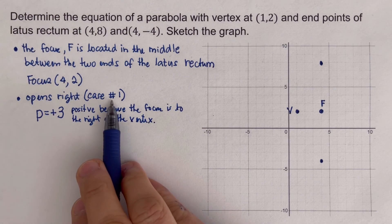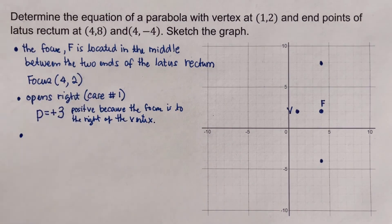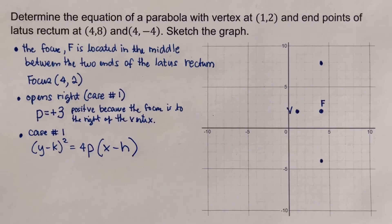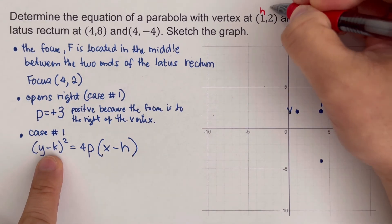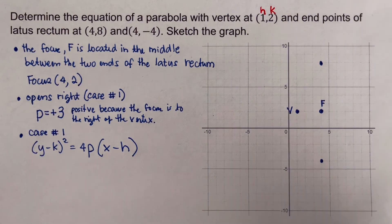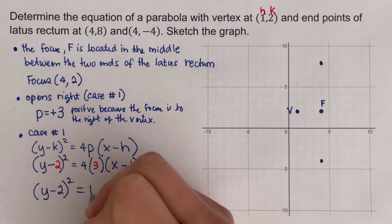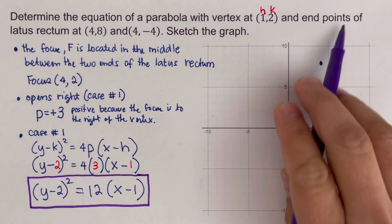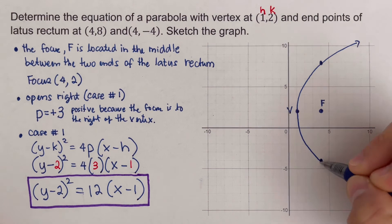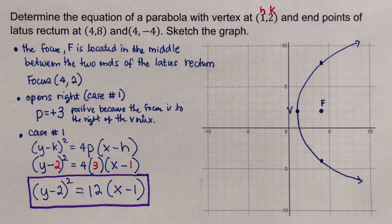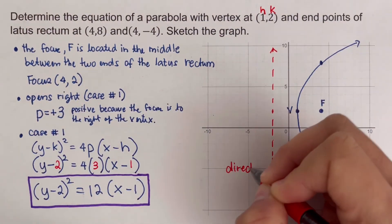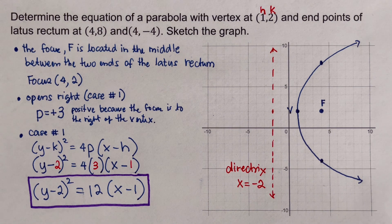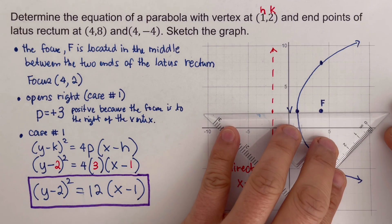Since this is Case 1, we use the general equation (y − k)² = 4p(x − h) and plug in the values of h, k, and p to get the equation. For the sketch, the directrix is p units on the opposite side of the focus from the vertex — going 3 units to the left. The line of symmetry passes through the vertex and the focus.